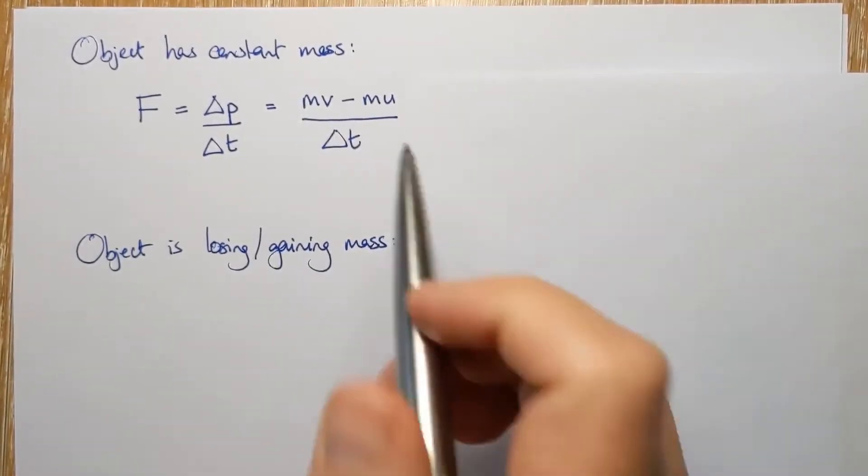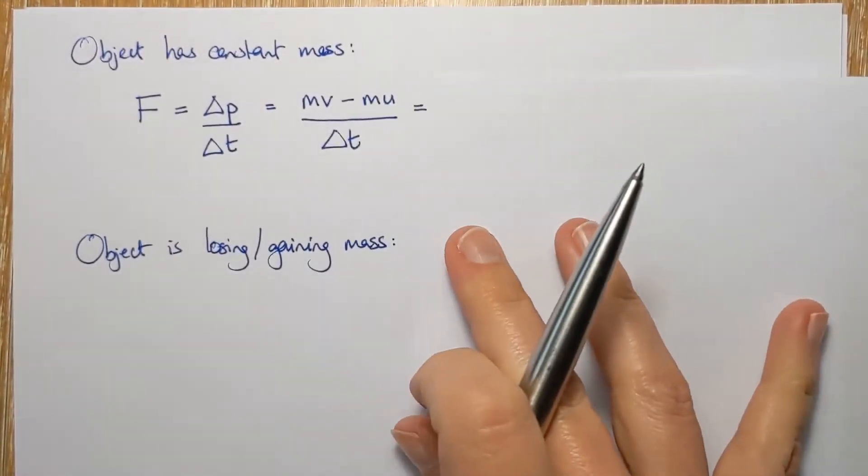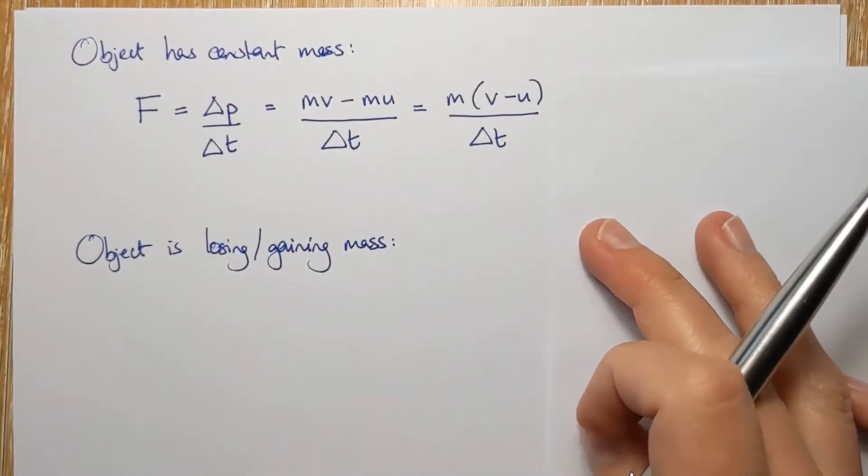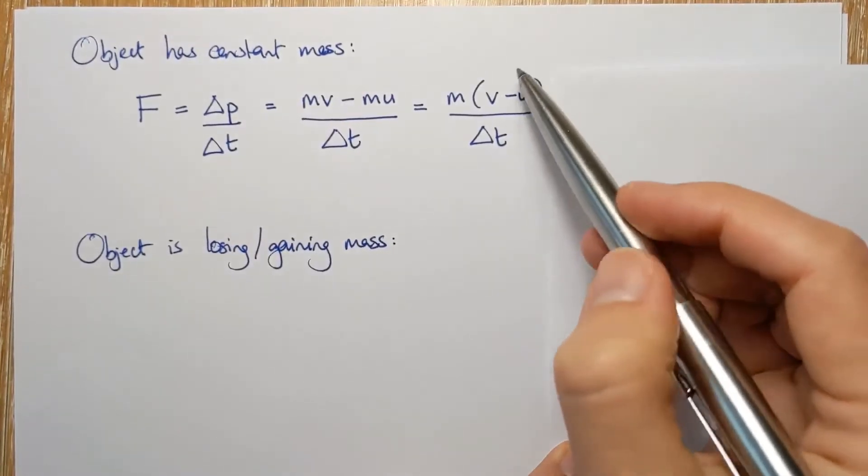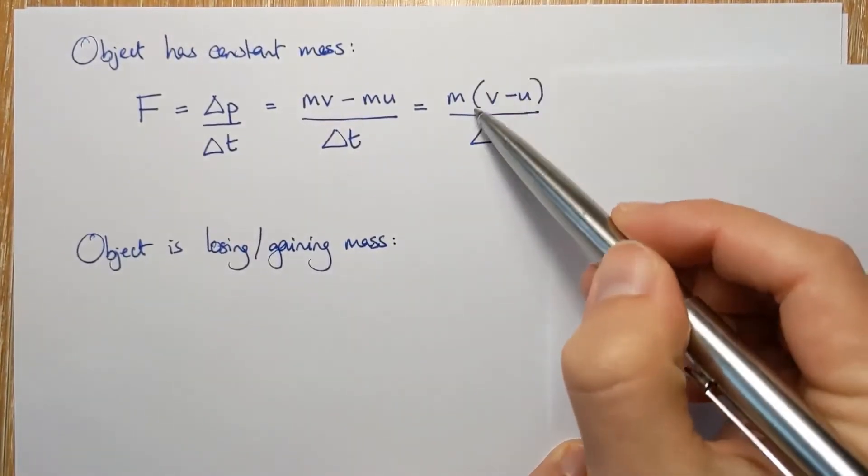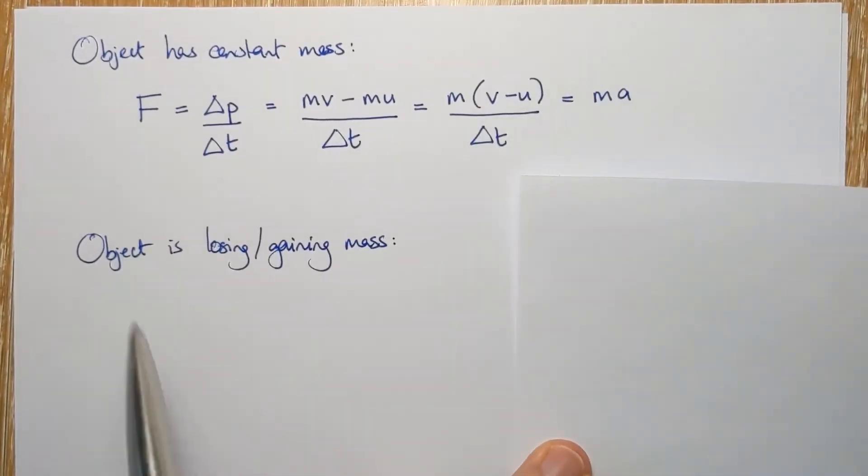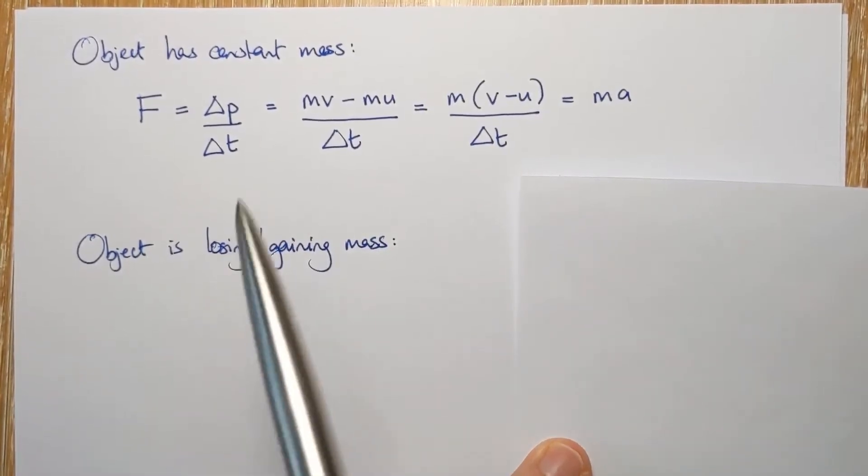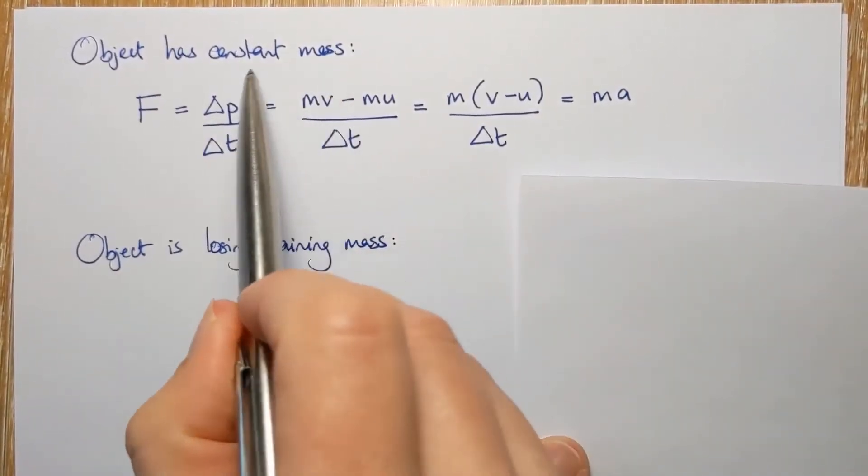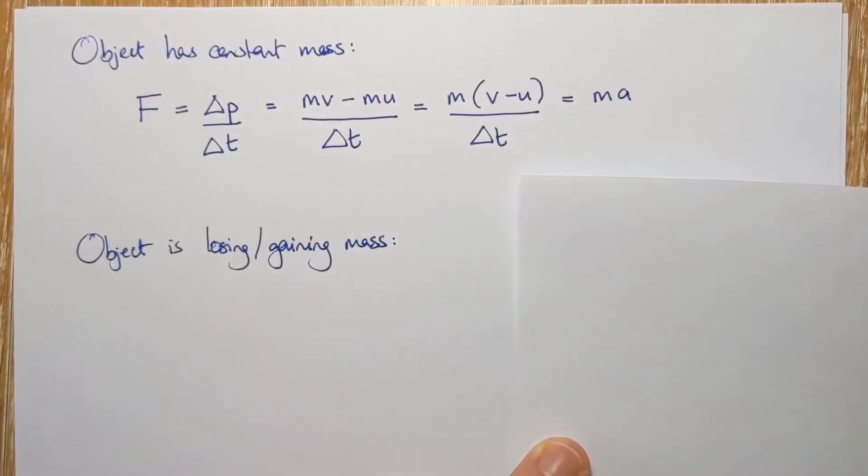I can, because M is not changing, I can factorize that. And then you can see, spot something familiar, V minus U over T, that's the acceleration. And so this is where F equals MA comes from. It is Newton's second law, but only if the object is not losing or gaining mass.